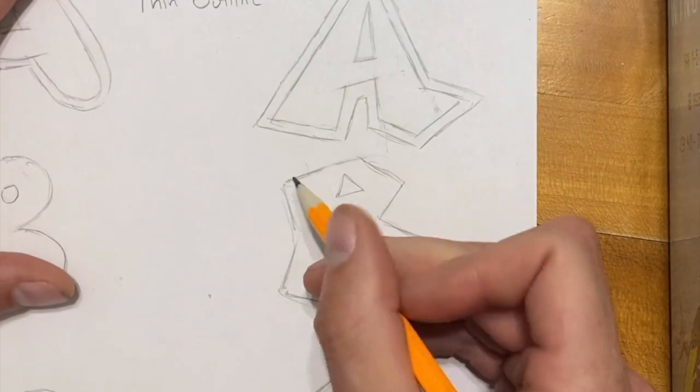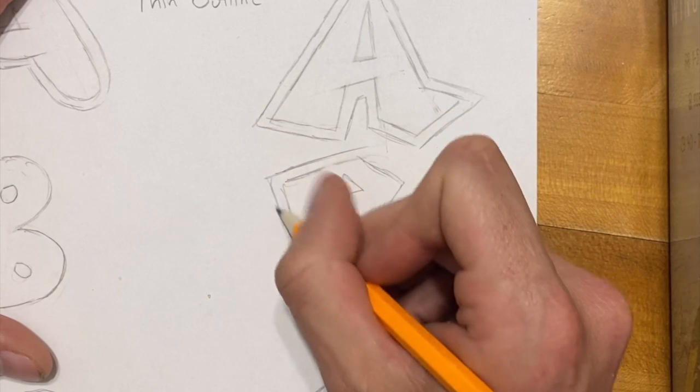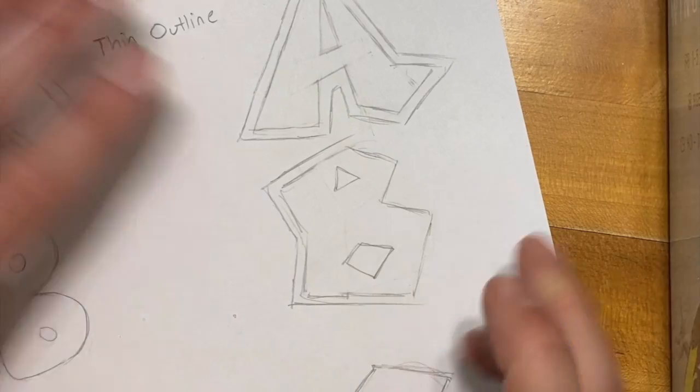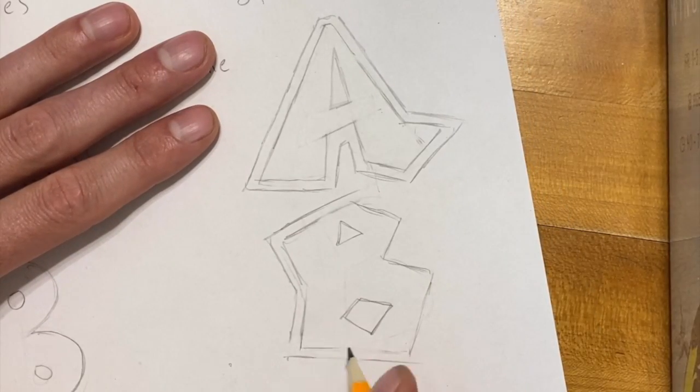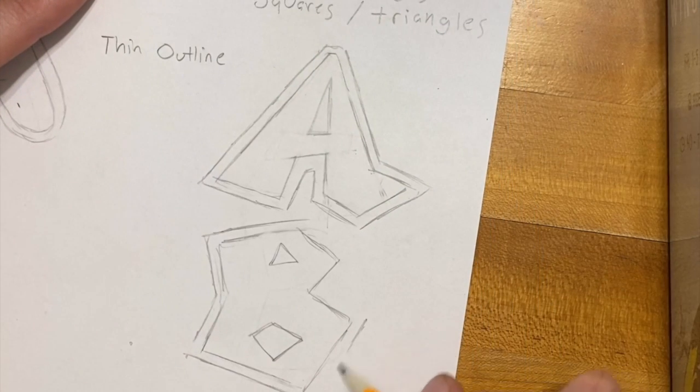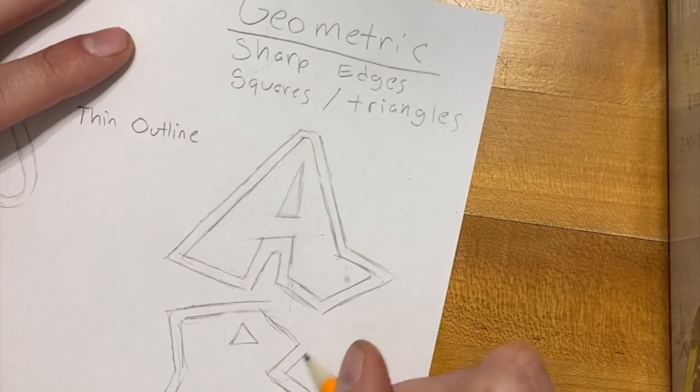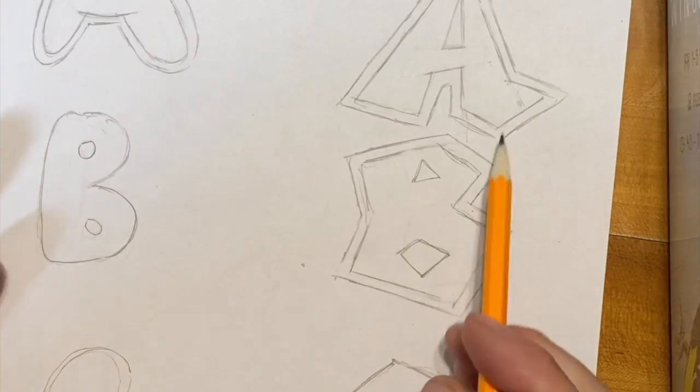We'll do the B down here as well. So go around each of your letters and try adding some nice thin outlines. If you need to clean any of your details up, any of your letters up, go ahead and do that. Don't worry about making it perfect the first time.